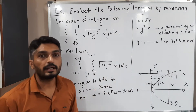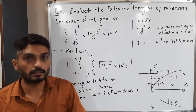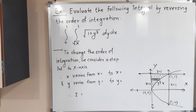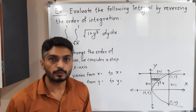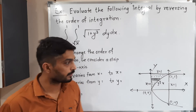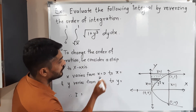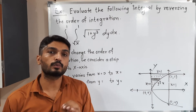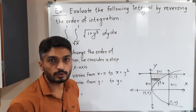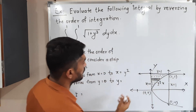In the given problem we had dy dx, meaning the original strip was parallel to the y-axis. To change the order of integration we now consider a strip parallel to the x-axis. This strip is bounded below by the y-axis (x = 0) and above by the parabola, whose equation gives x = y². We move this strip from bottom to top: at the bottom y = 0 and it stops at the line y = 1.